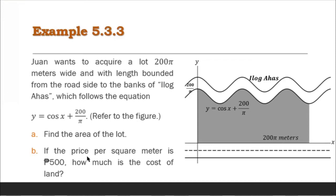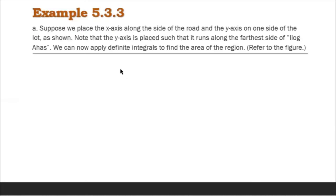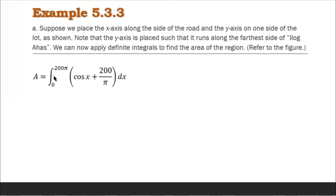Letter B: if the price per square meter is 500 pesos, how much is the cost of the land? These are the two questions we will answer. Suppose we place the x-axis along the side of the road and the y-axis on one side of the lot. The y-axis is placed such that it runs along the farthest side of Ilog Ahas. We can now apply definite integrals to find the area of the region. The area of the region is the definite integral of cosine x plus 200 over π dx, with lower bound 0 and upper bound 200π.